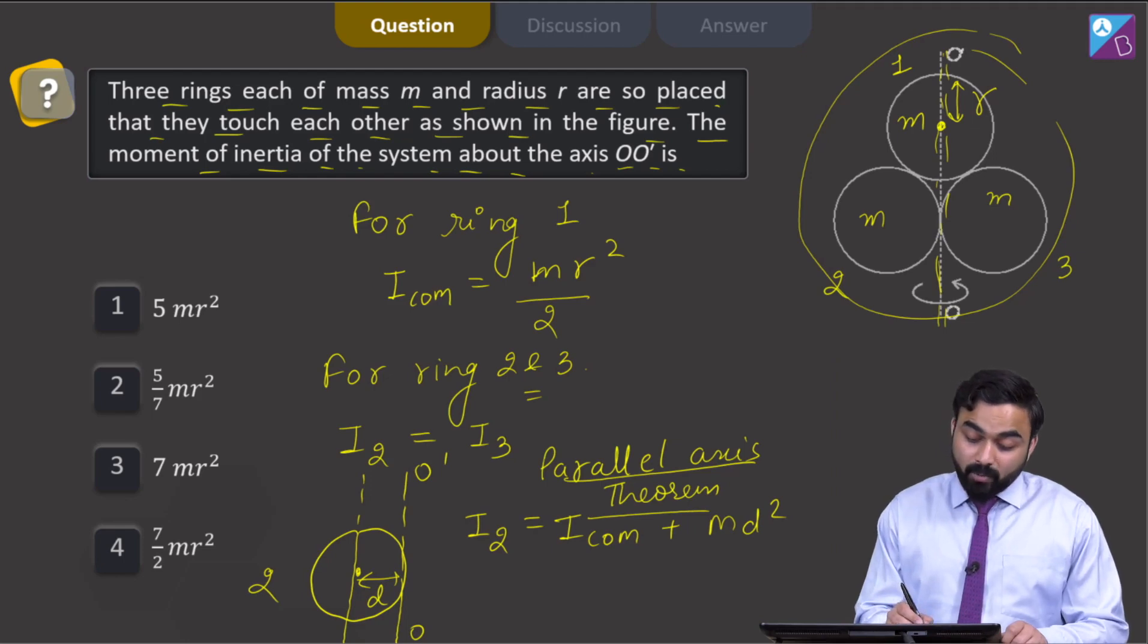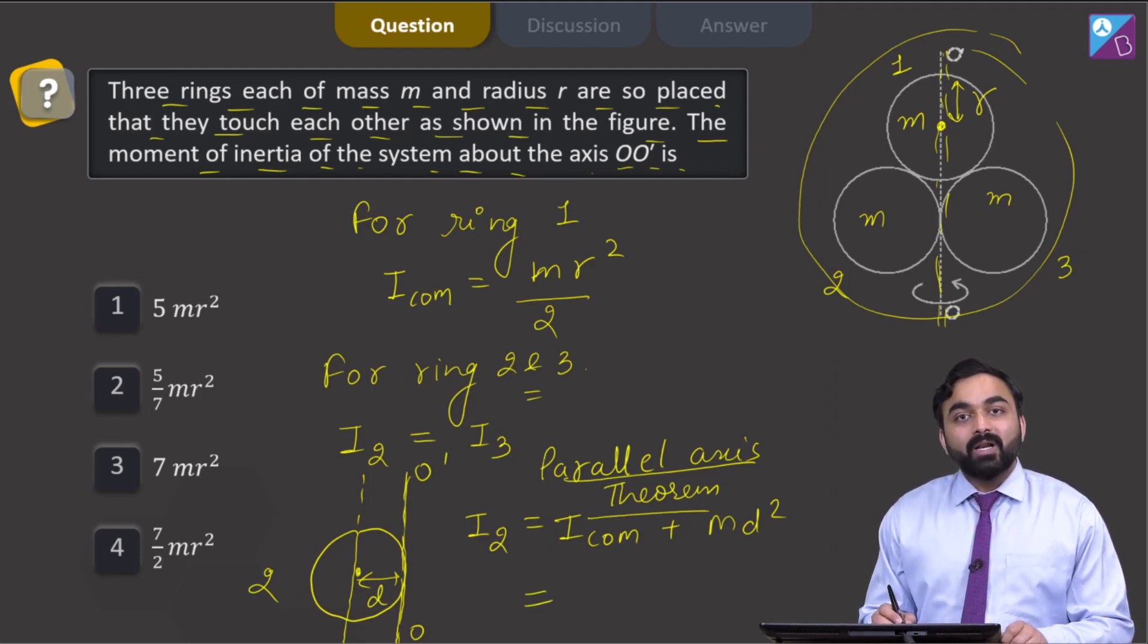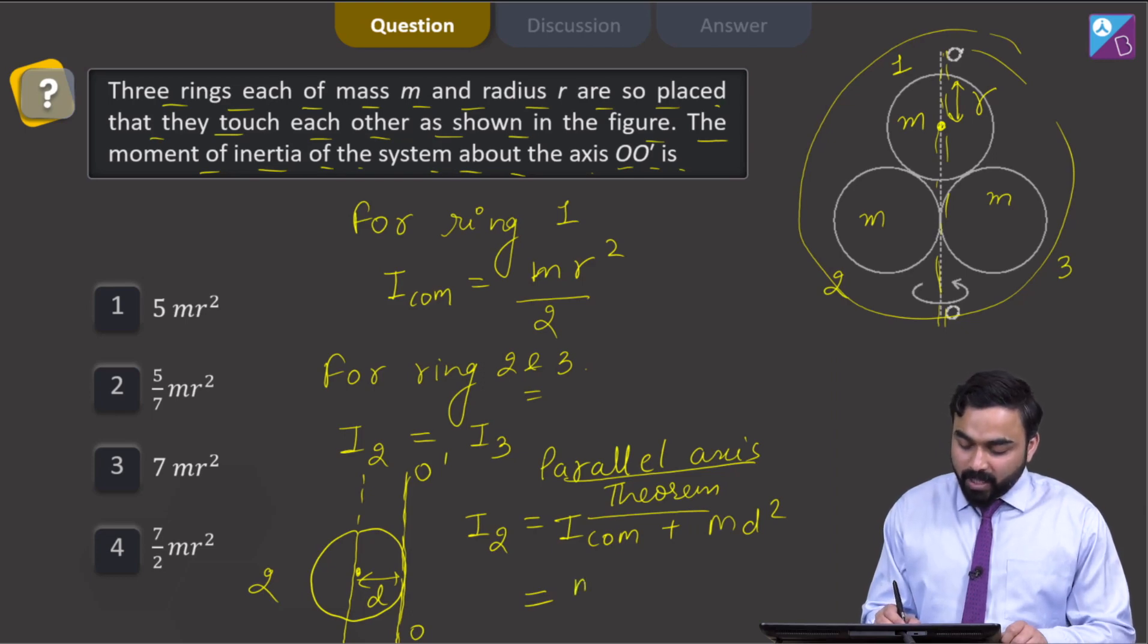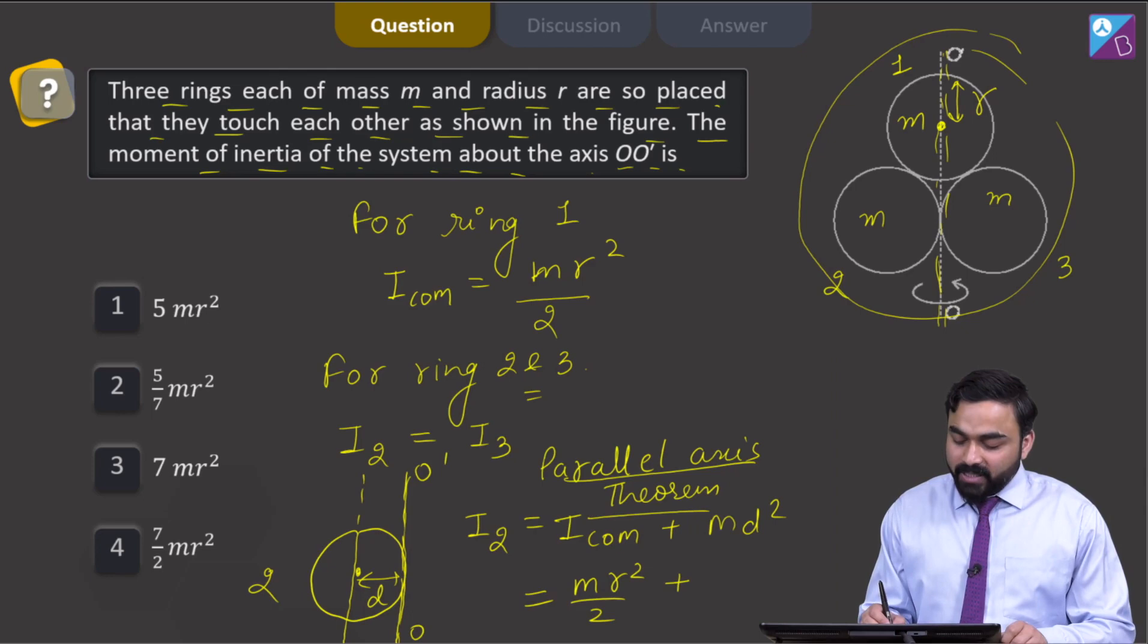I need to calculate the moment of inertia of rings 2 and 3 about an axis passing through the tangent of the ring. The moment of inertia of a ring about its center of mass is mr²/2, and the value of d equals r, so md² = mr².